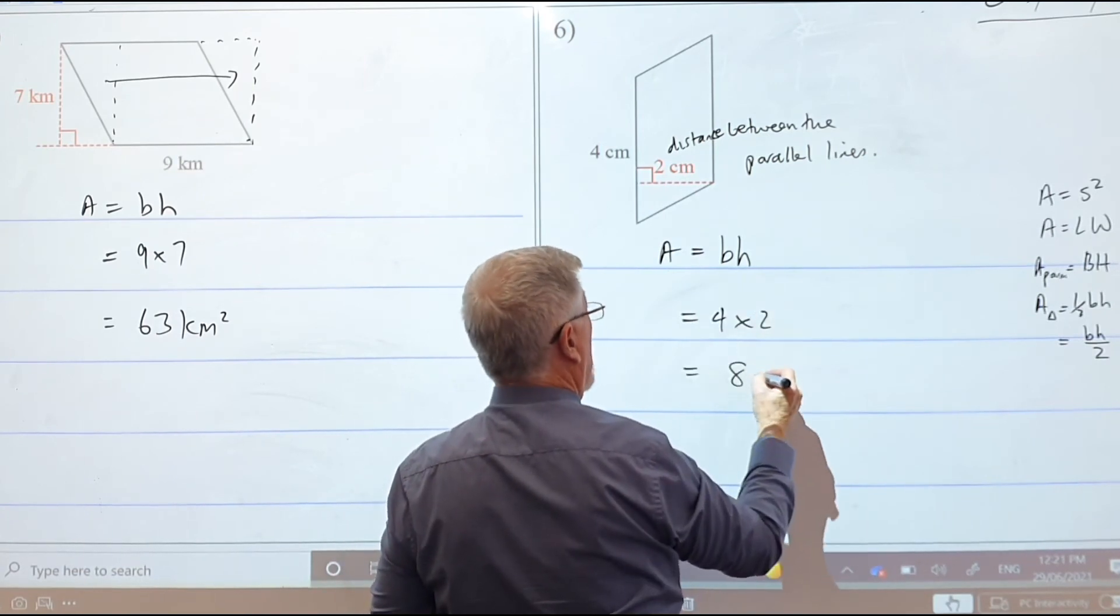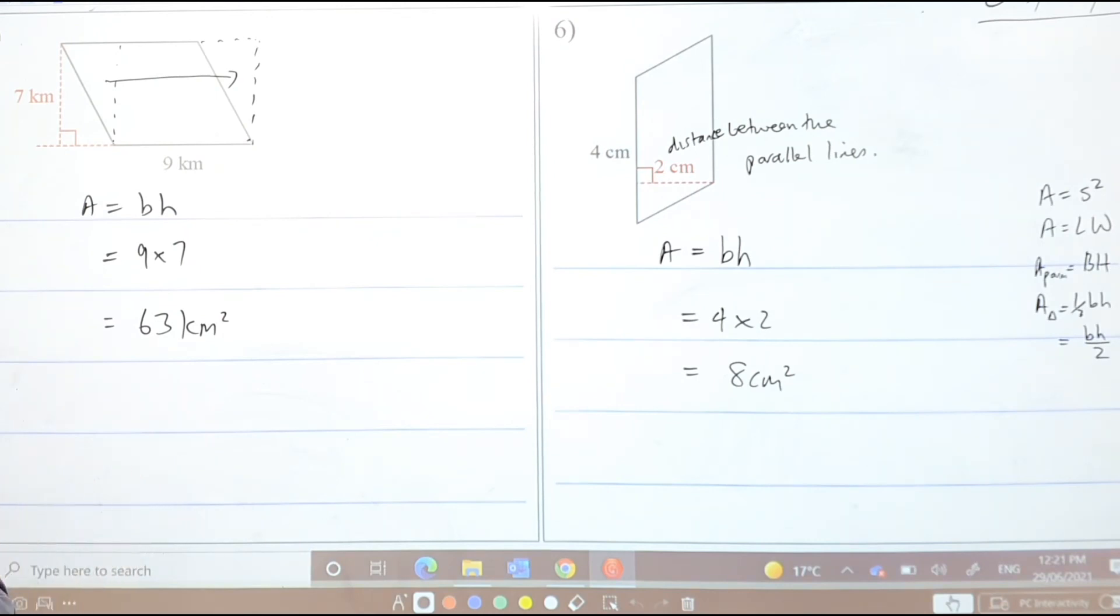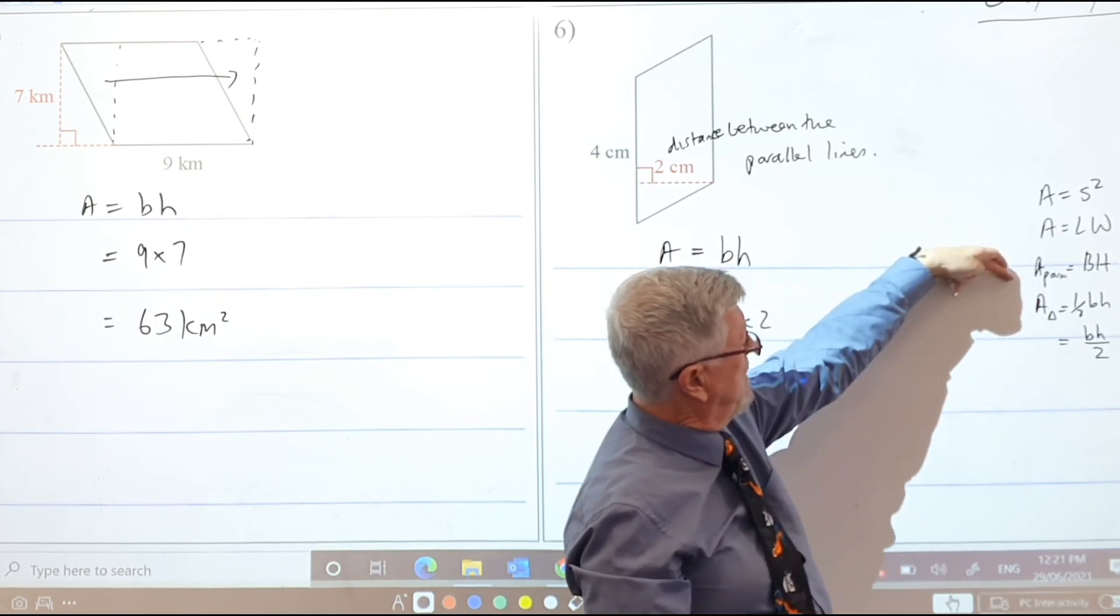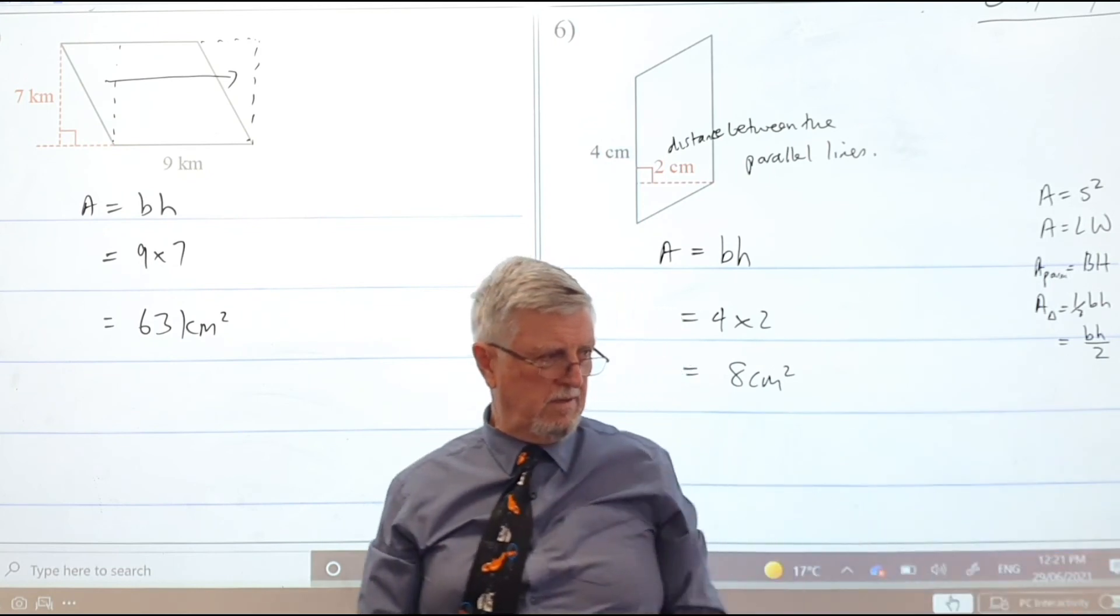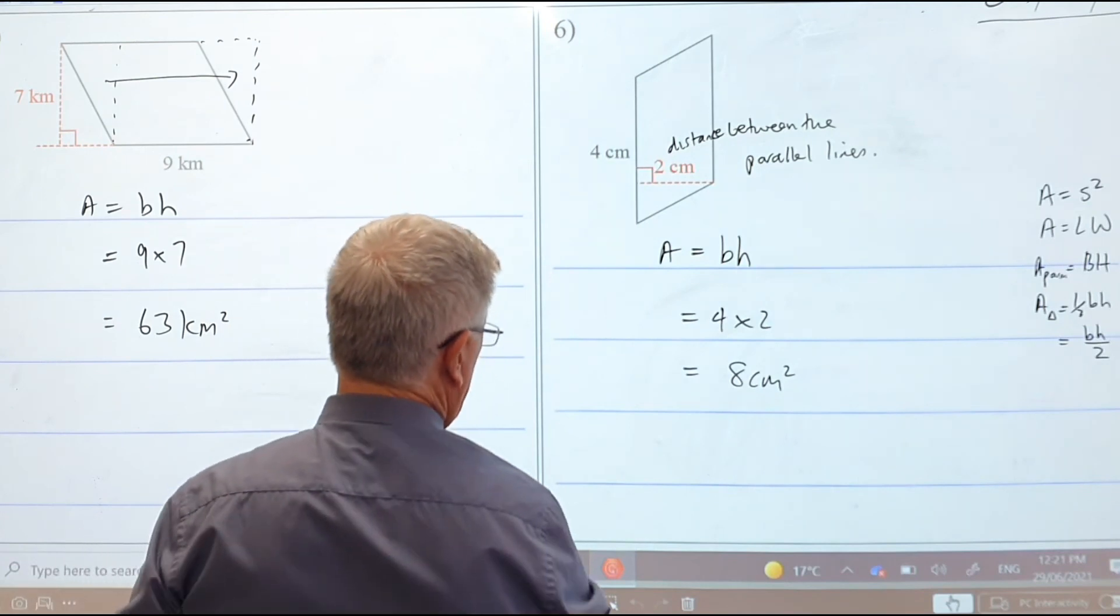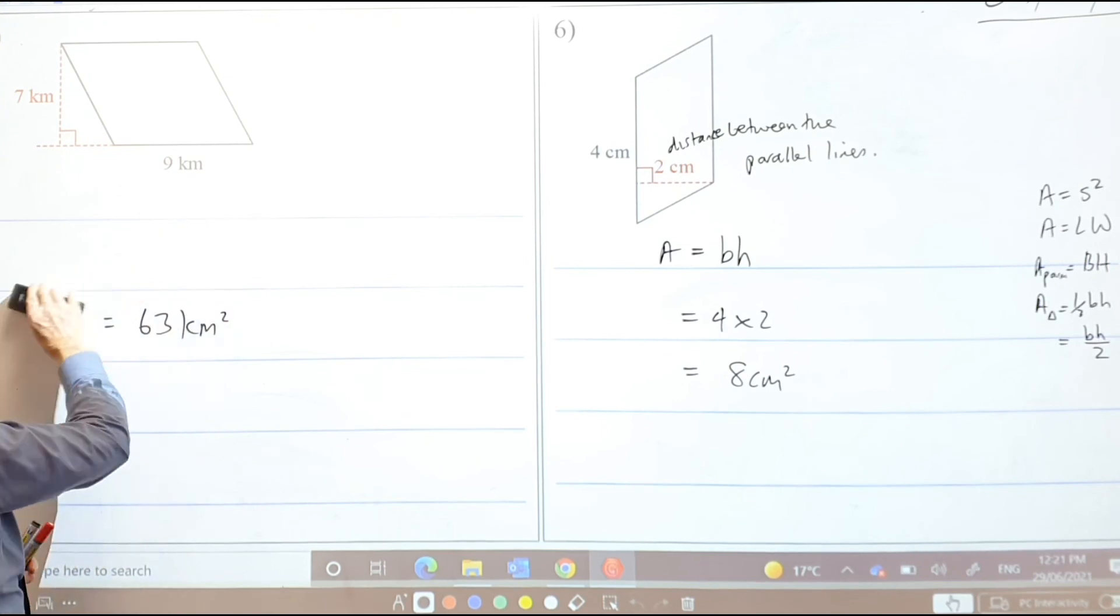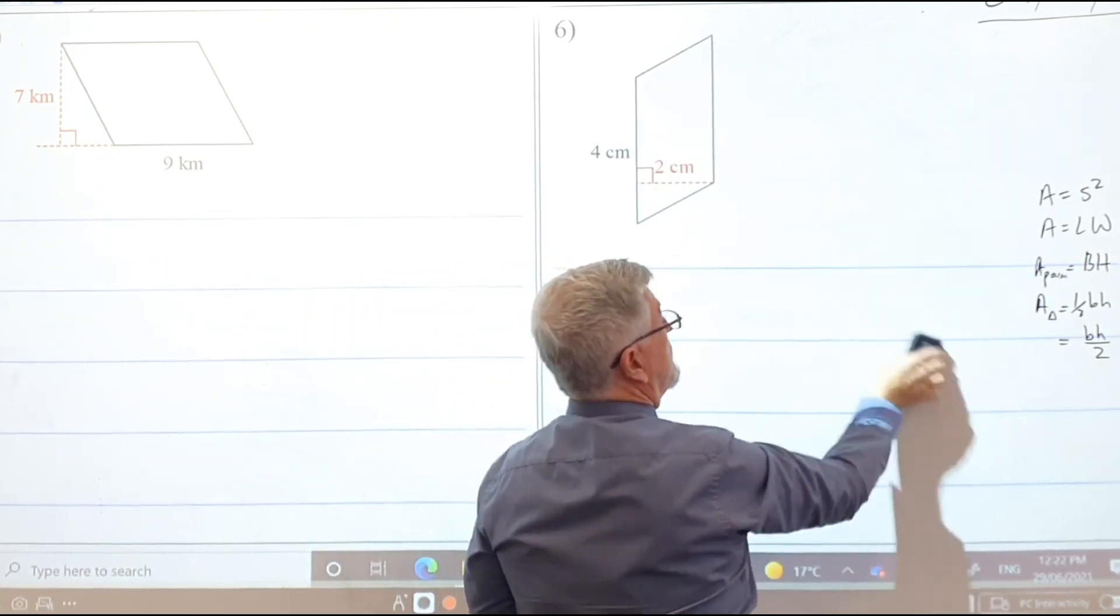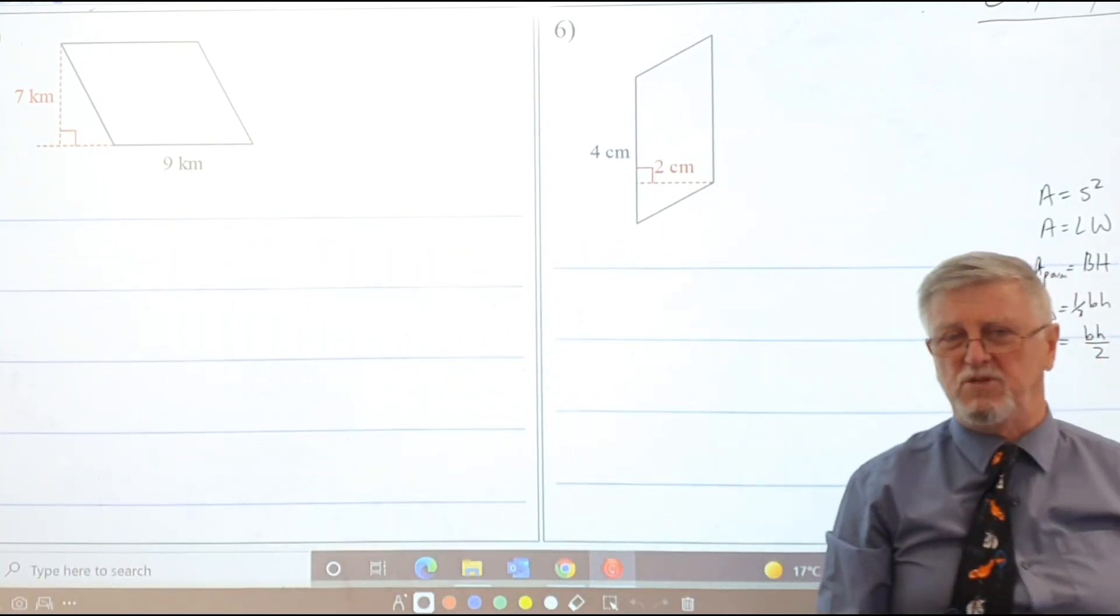So it's just 4 times 2, which is 8 square centimeters. So to me parallelograms, rectangles, squares, triangles are all so easy. They're all multiply the two numbers, but for triangles you have to remember to half. So you could draw the base and height and then half it? Yes. Just be careful for a triangle that you don't half both the numbers. You can half after you've multiplied them. Next one.